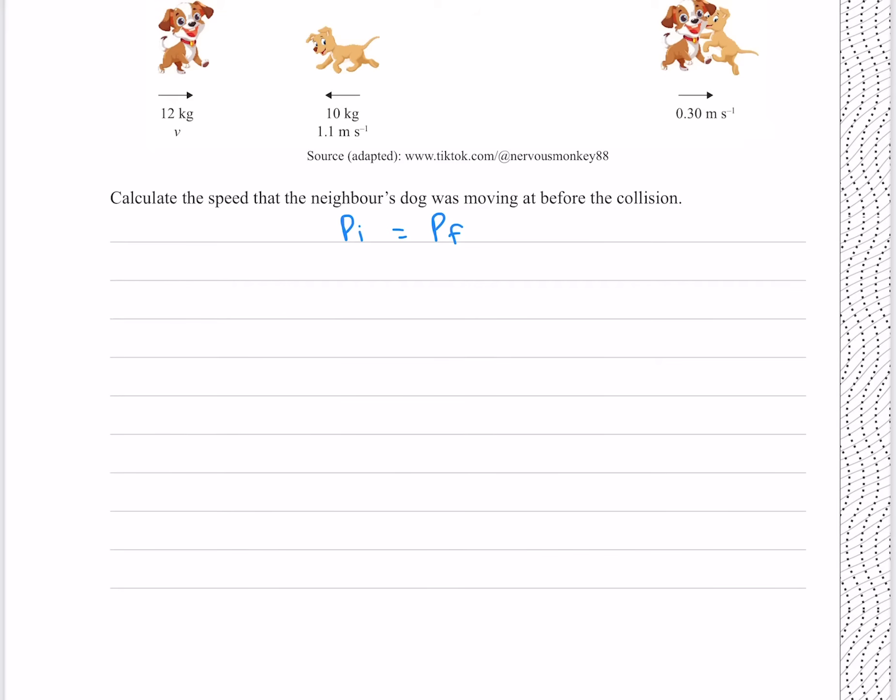Our initial momentum was the momentum of this dog here, its mass is 12, and its velocity is v, which is what we're trying to find. Adding our momentum of this dog here, except because it's in the opposite direction, the velocity is negative, so it's a negative momentum. The dog has a mass of 10, and a velocity of 1.1. Our momentum finally is the total mass of our two dogs, so 12 plus 10, multiplied by their combined velocity, which is 0.3. To solve this for v, we first add 10 times 1.1 to both sides, and then divide both sides by 12, which gives me 1.5 meters per second to two significant figures.